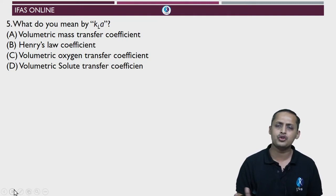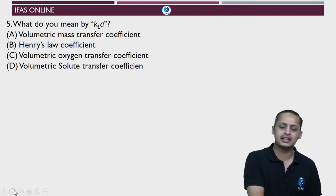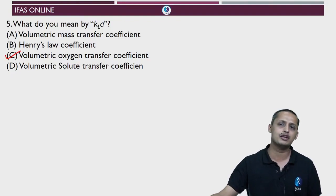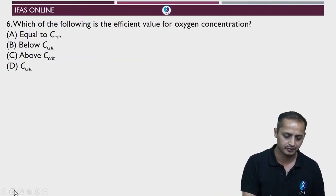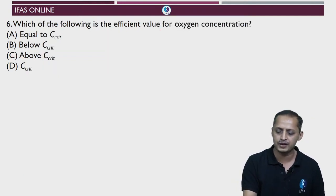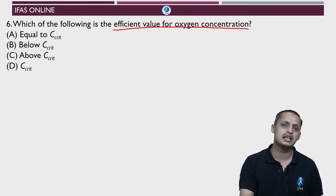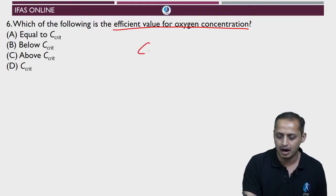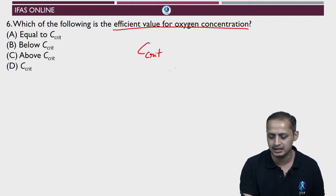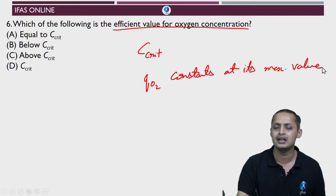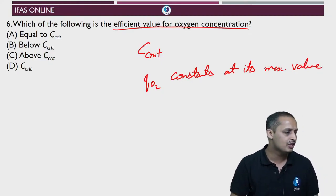Next question: what is K_LA? K_LA is the volumetric oxygen transfer coefficient — a straightforward definition question. Following that, which oxygen concentration is the efficient value? This is when oxygen is not a limiting factor — when microbial growth is fastest. This happens when oxygen concentration is above C_critical, at which point QO2 becomes constant at its maximal value, meaning every cell can optimally use the oxygen it needs.